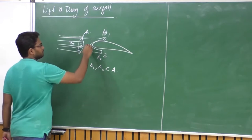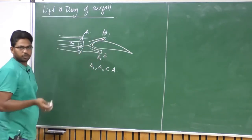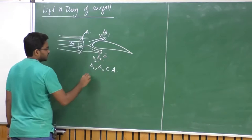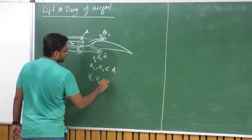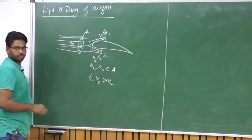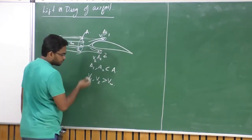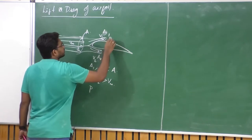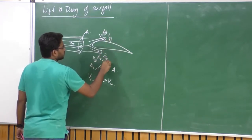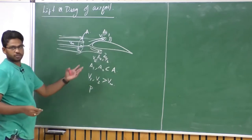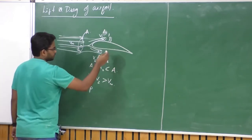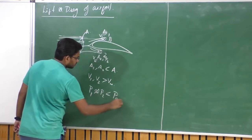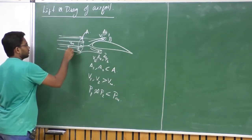Since the area is reduced, the flow tries to accelerate on the top and bottom surfaces, giving velocities V1 and V2, where V1 and V2 are greater than V infinity. This results in a drop in pressure, according to Bernoulli's theorem. Let P1 be the pressure on the top side and P2 be the static pressure on the bottom side of the airfoil. P1 and P2 are both less than the free stream pressure P infinity.